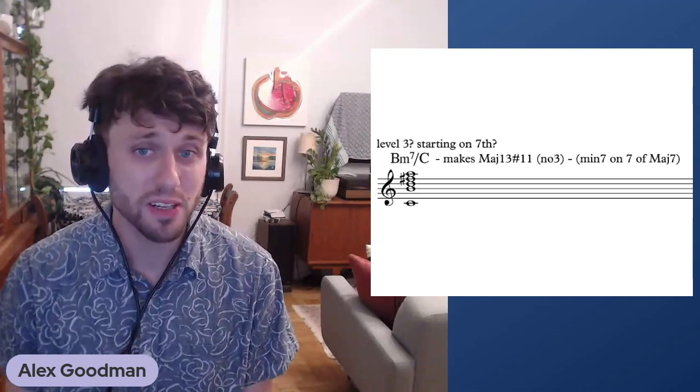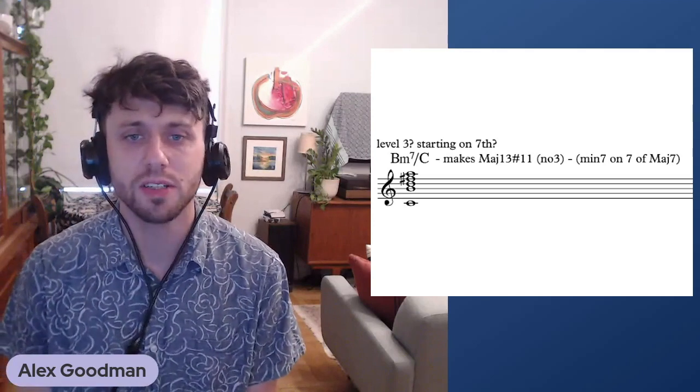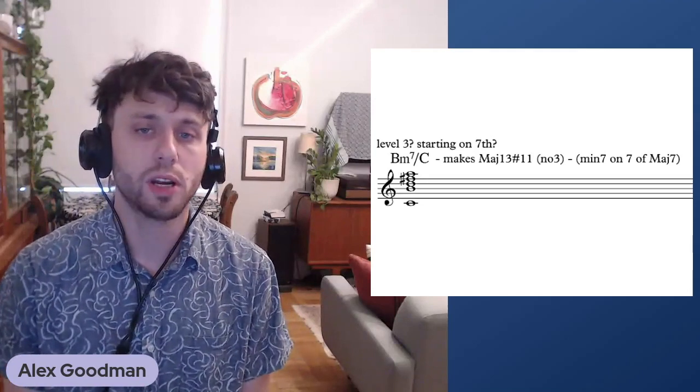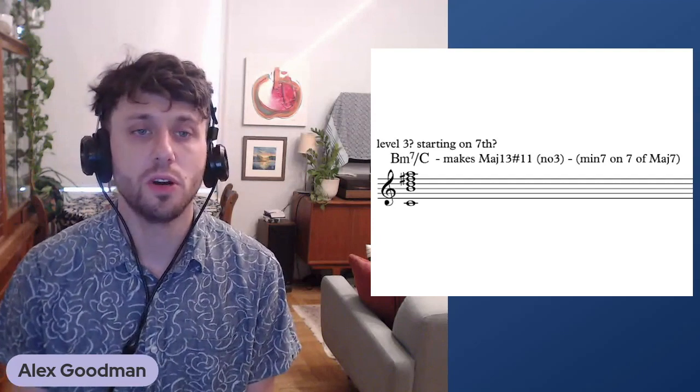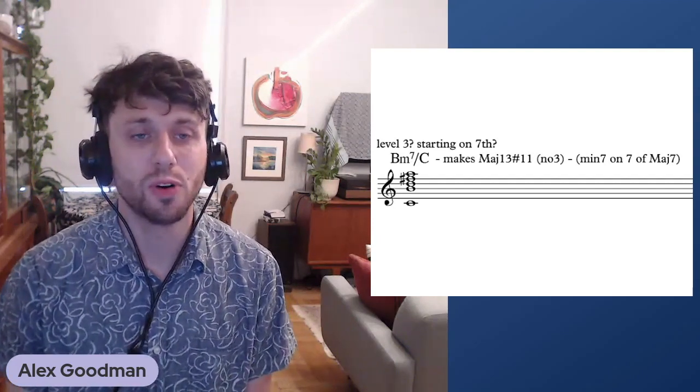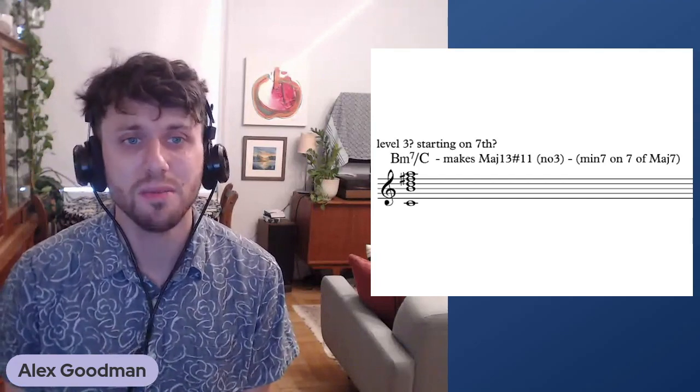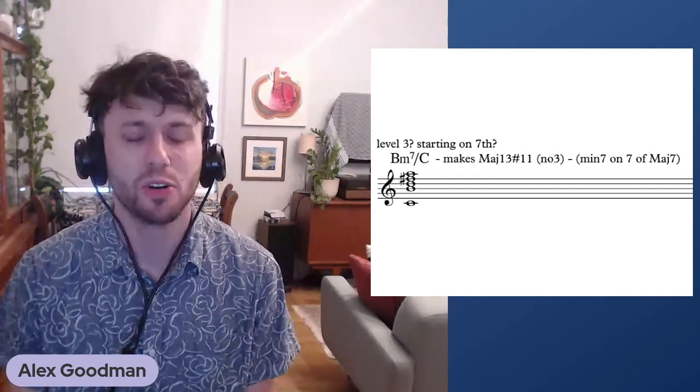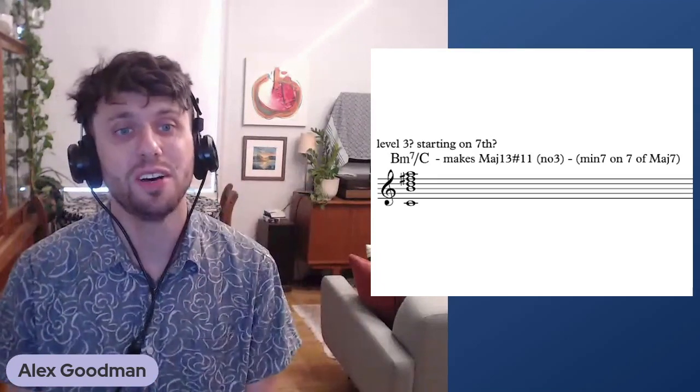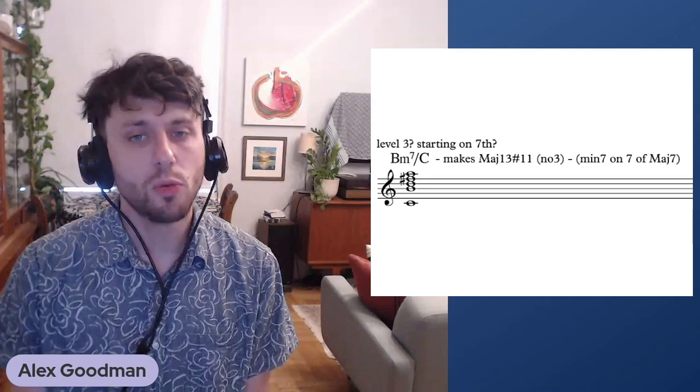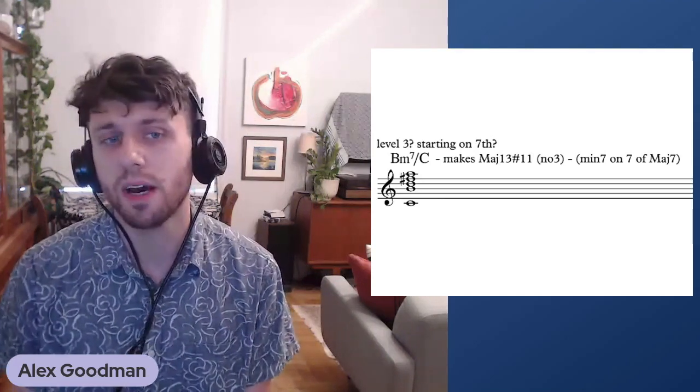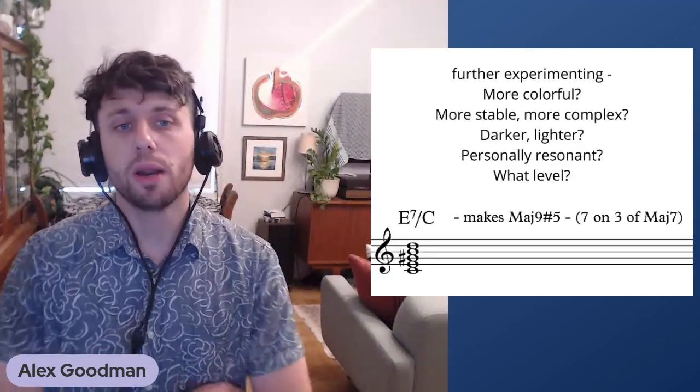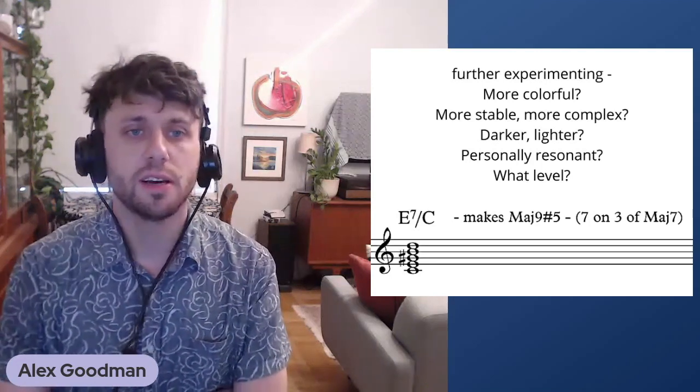Let's keep going. Maybe a third level, B minor seven over C. Now we're implying major 13 sharp 11 no three. So you get that 13th, more color. These are just working off of the chord tones. We could be thinking about different types of chords starting from every degree of C major, really thinking from every note chromatically, implying this range of colorfulness.